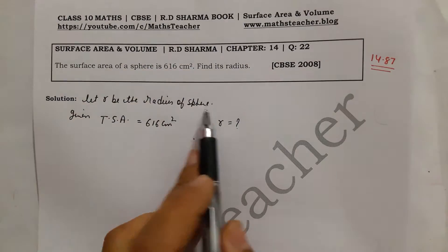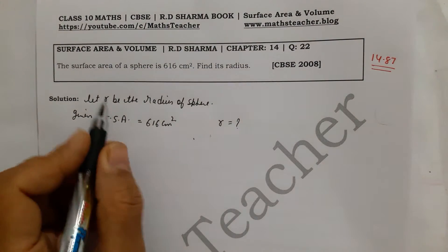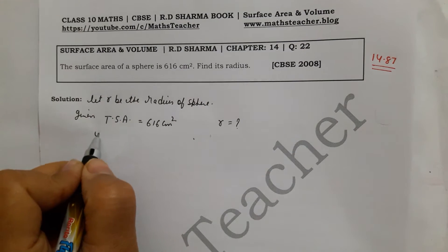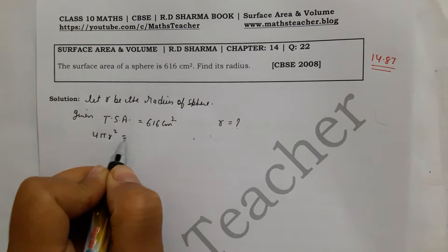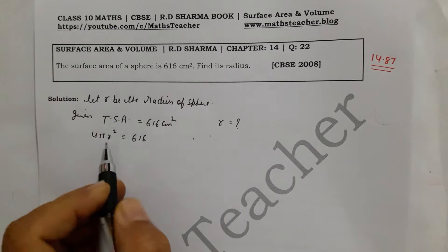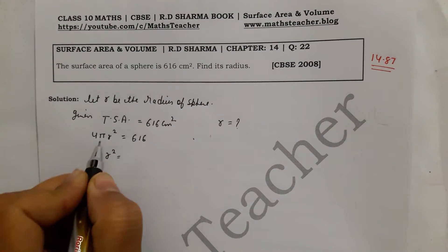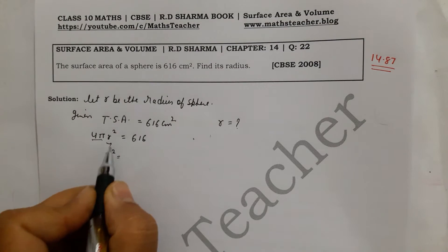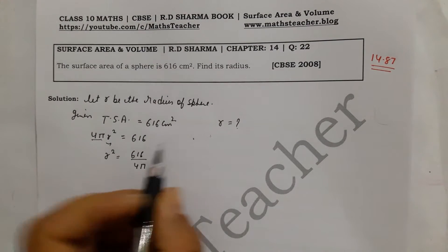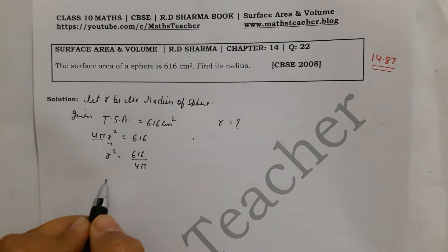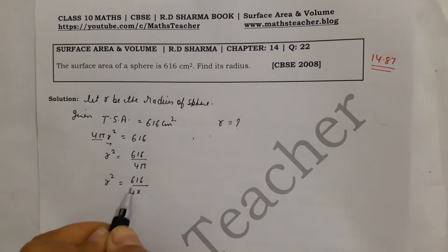Let R be the radius of the sphere. The formula for total surface area of a sphere is 4πr². So 4πr² is equal to 616. We need to find the radius. Let's solve: r² = 616 divided by 4π. Now put the value of π as 22/7.